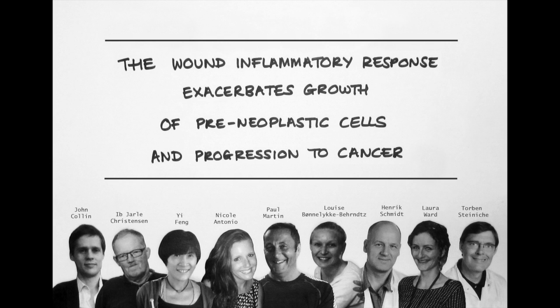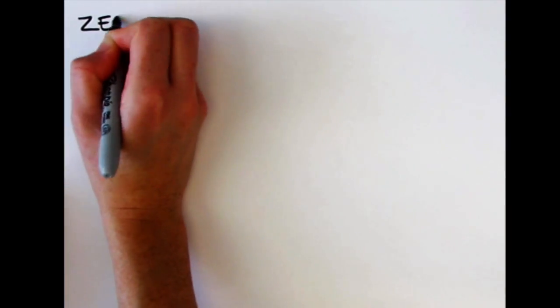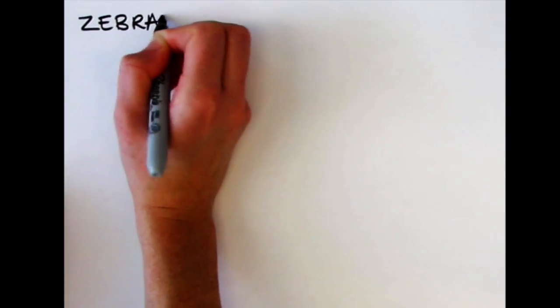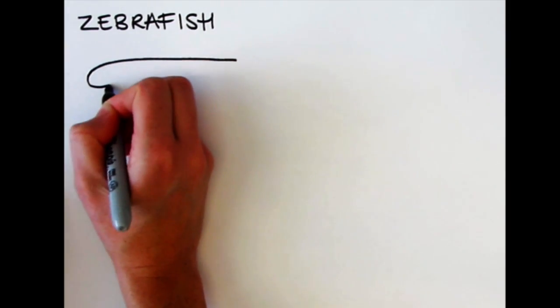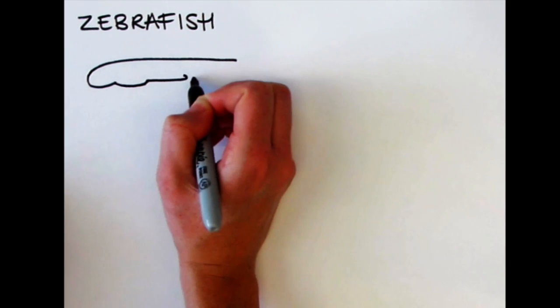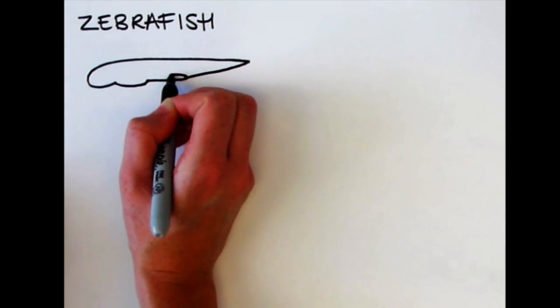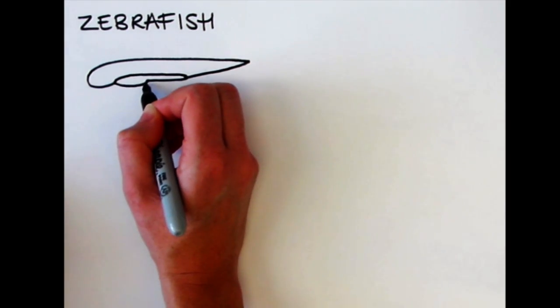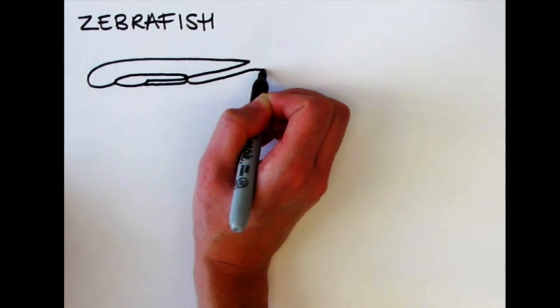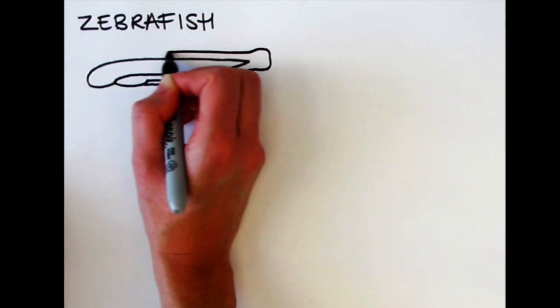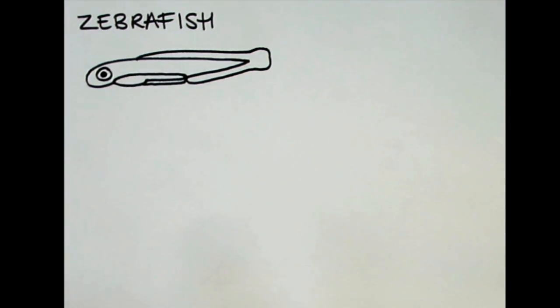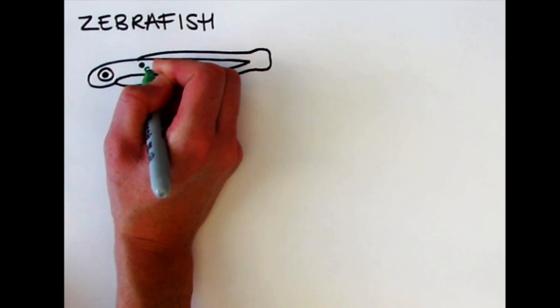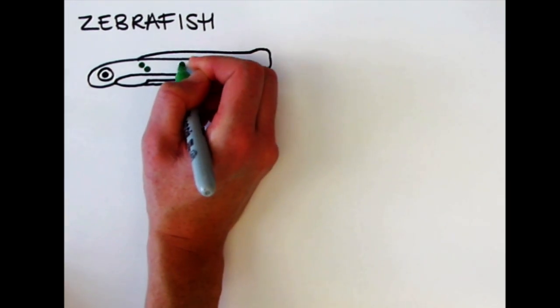We began our studies in this model organism, zebrafish, which is absolutely outstanding for investigating early stages of cancer initiation and progression because of its translucency. It's very genetically tractable, but it's also see-through, which means you can put the anesthetized zebrafish larvae under the microscope and watch how cancer cells grow from the moment they're born and how they interact with other tissues and cells, for example the immune system.